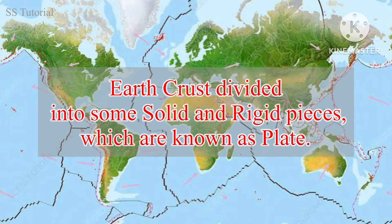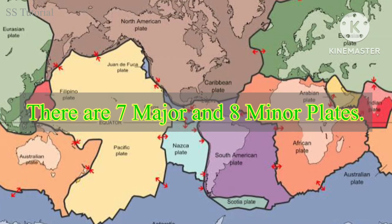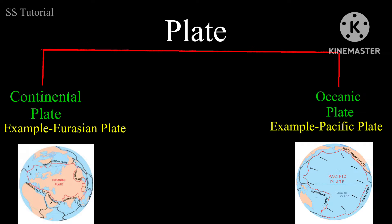Our earth's crust is divided into some solid and rigid pieces which are continuously moving. All these pieces are known as plates. There are 7 major plates and 8 minor plates. These plates are mainly two types: continental plates and oceanic plates.